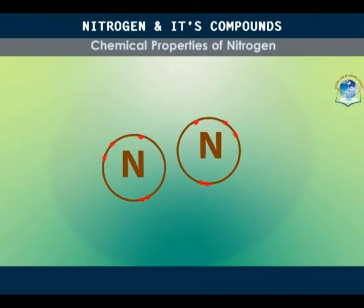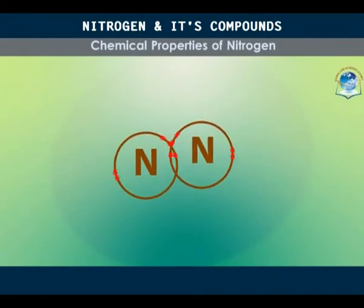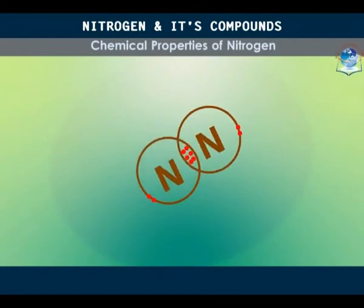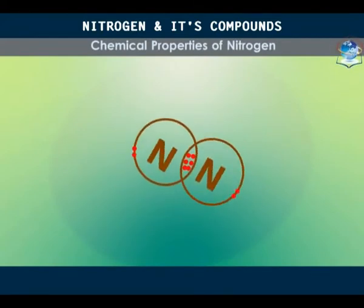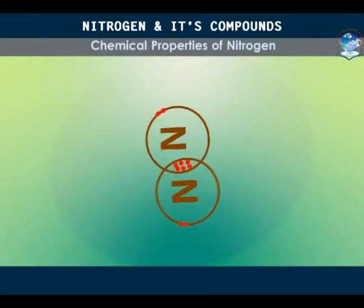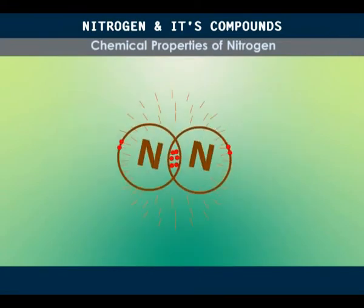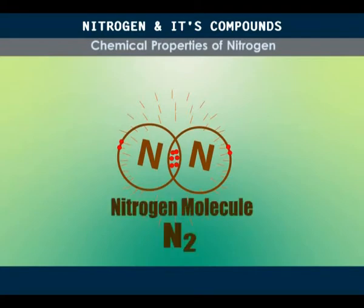Chemically, nitrogen gas is highly inert under ordinary conditions of temperature and pressure. The inertness is due to the presence of a triple covalent bond between the two nitrogen atoms forming a nitrogen molecule. The bond is very strong and requires a lot of energy to break.